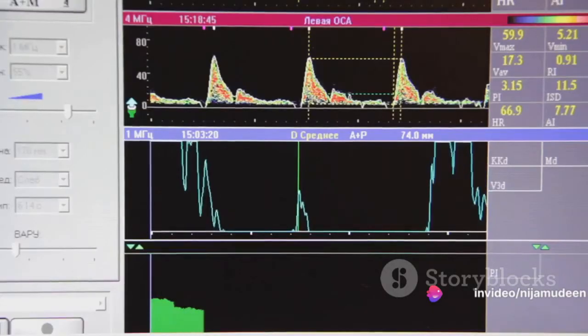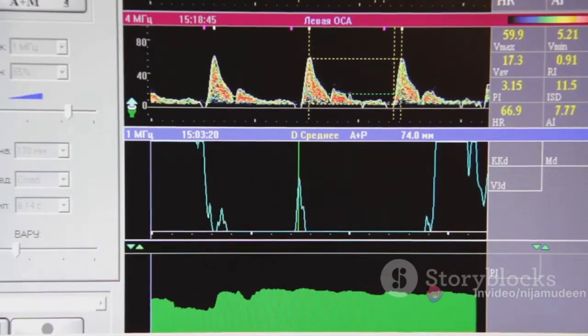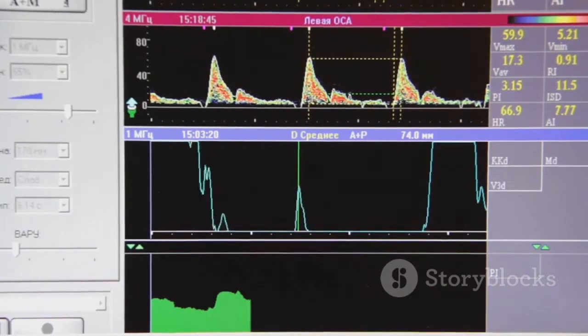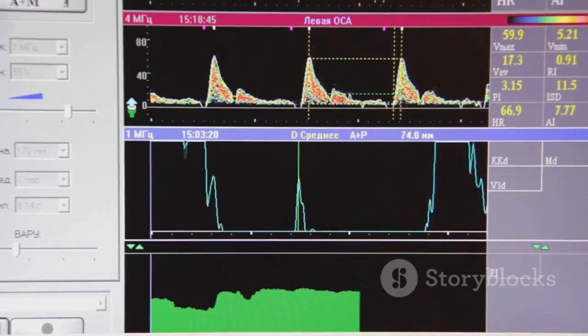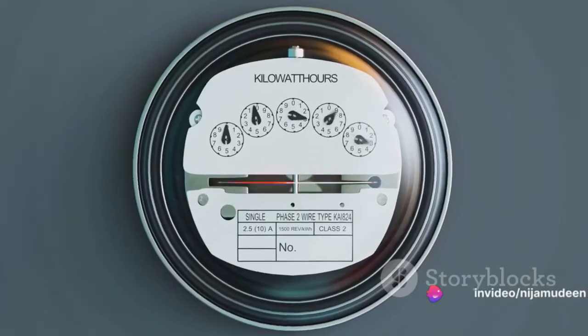Imagine this. Each wire connecting the RTD to the instrument has its own resistance. If each wire has a resistance of half an ohm, when you measure the resistance of the RTD, you're also measuring an extra 1 ohm. This could lead to a discrepancy in your readings.